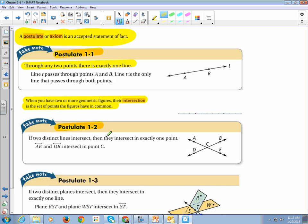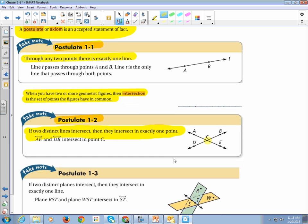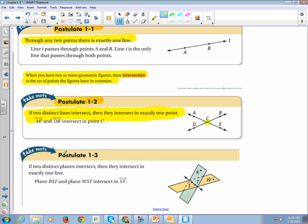When you have two or more geometric figures, their intersection is a set of points the figures have in common. For example, postulate 1-2, if we have two lines and they intersect, then they intersect at exactly one point. Two lines, when they intersect, make a point. Two planes, when they intersect, make one line. So when two lines intersect, they make a point. When two planes intersect, they make a line.